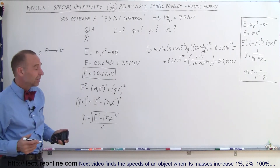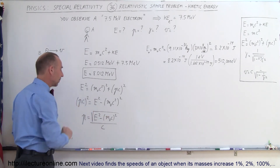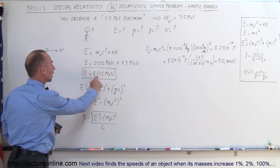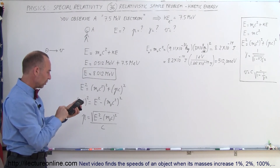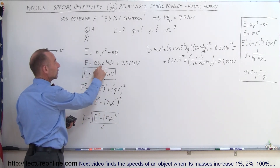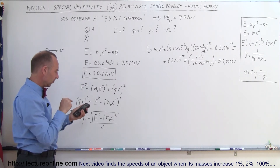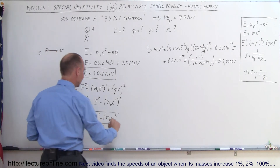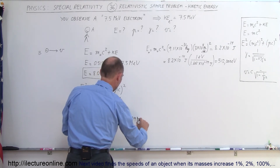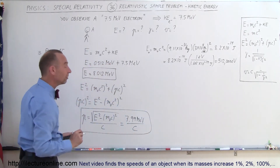Typically momentum is expressed in terms of c, so we leave it as MeV/c. The total energy is 8.012 MeV, so we compute 8.012 squared minus 0.512 squared, then take the square root. This gives us a momentum of 7.99 MeVs divided by c — that is the momentum of the electron.